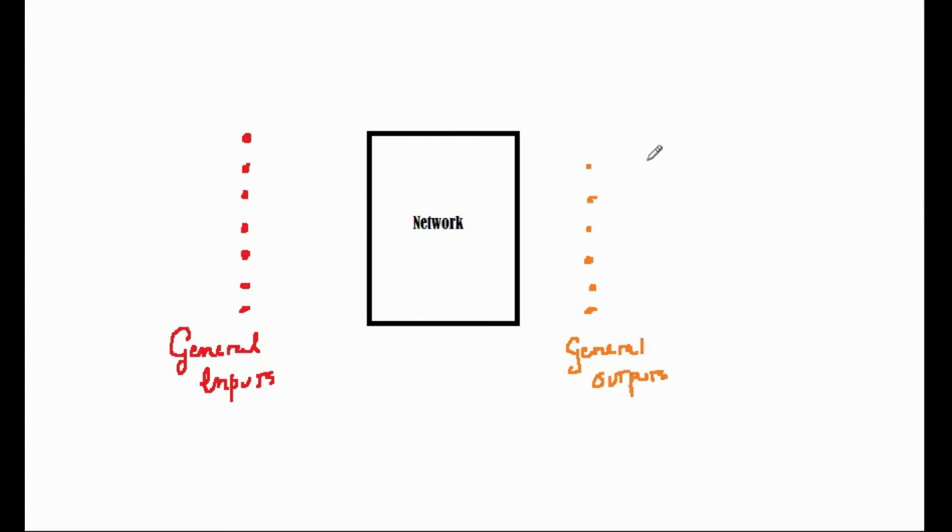You might ask then, what is the difference between the neural net and any other general mapping system, for example digital electronics or digital logic? The answer, of course, is that the network can learn.